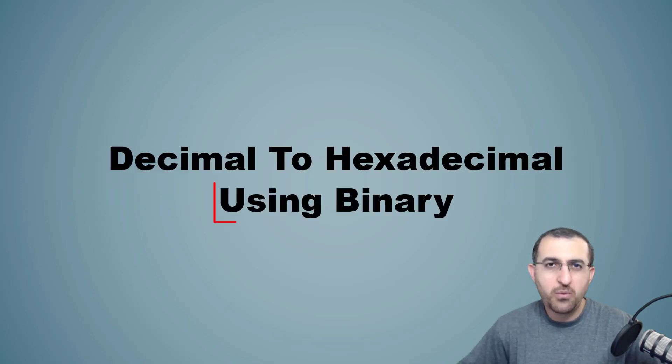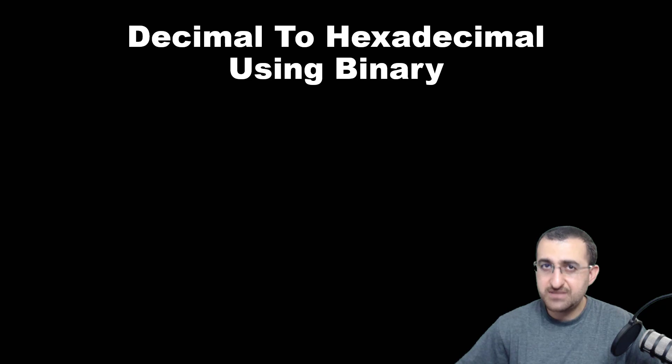In this section we will use binary as a bridge to convert decimal number to hexadecimal. So first we need to convert a decimal value to a binary number, then convert binary to hexadecimal.